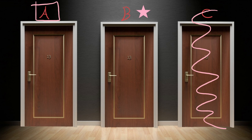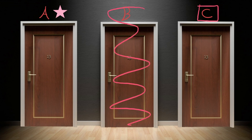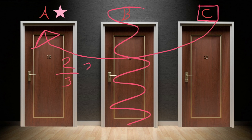A star indicates the correct door. Look at this scenario. You pick door C with 1 in 3 odds of being right. The host sees your decision, picks door B to reveal to you as an incorrect door, and since you had a 1 in 3 chance of being wrong in your first choice, switching doors should give you a 2 in 3 chance of winning, right? Wrong. This is not the Monty Hall problem, and this scenario gives you a 50-50 chance.